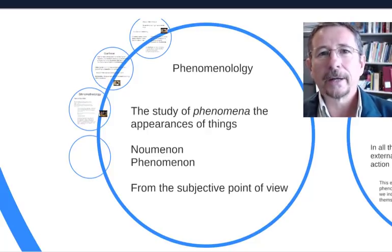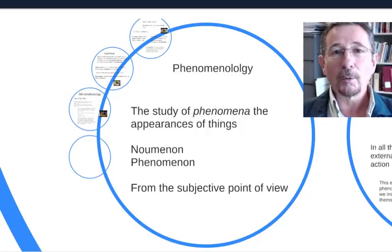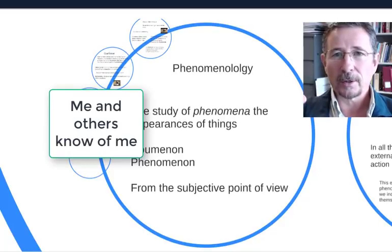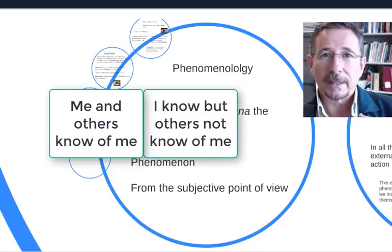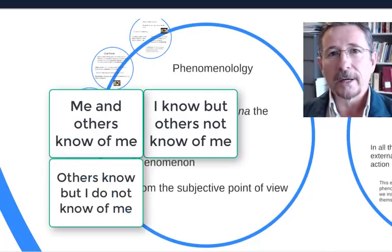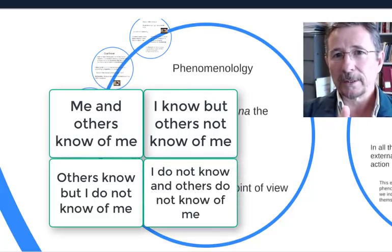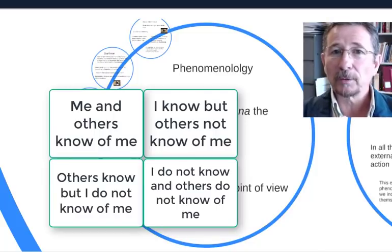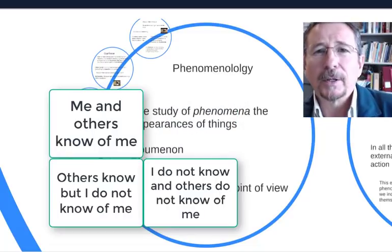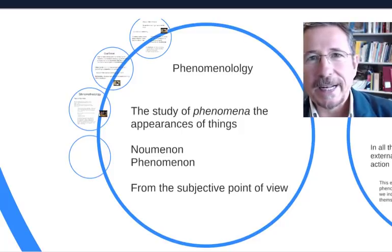There's the famous Johari window. We can divide the knowable into four windows: things we know of ourselves and others know — so everyone knows; things I know of myself but others do not; things others know of me that I don't know of myself; and lastly, the blackout window — things I don't know of myself and others don't know either. The point is it is not just face value — we need to consider how complicated it is to get to know things.